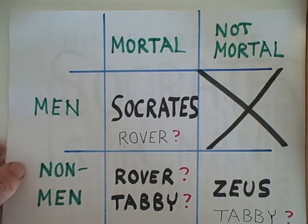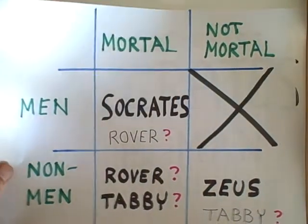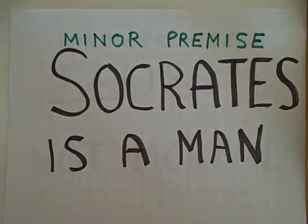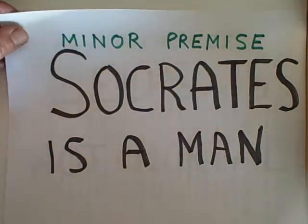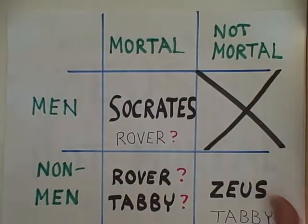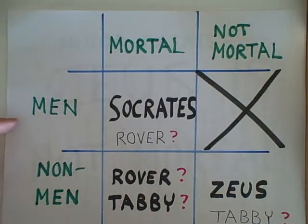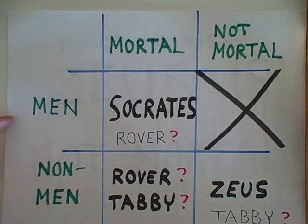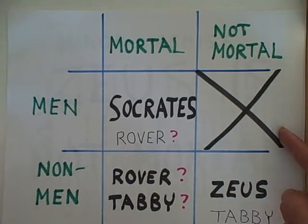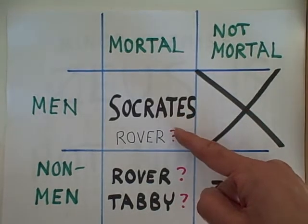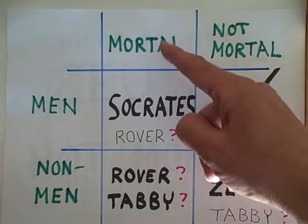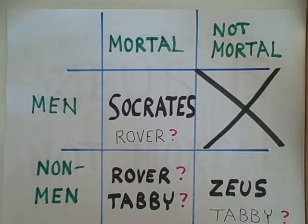Let's look at a minor premise that will give us a valid conclusion: Socrates is a man. Once I know that Socrates is a man, I know that he's in the row of men. He has to be in one of the two columns, but he can't be in the not-mortal column because there are no men who are not mortal. So Socrates must be in the mortal column. Therefore our conclusion is: Socrates is mortal.